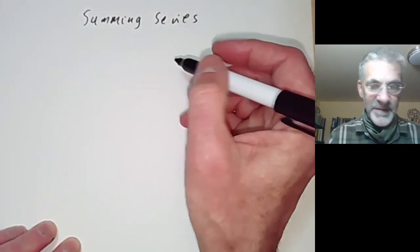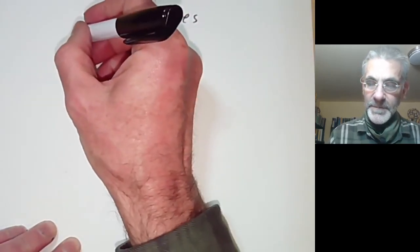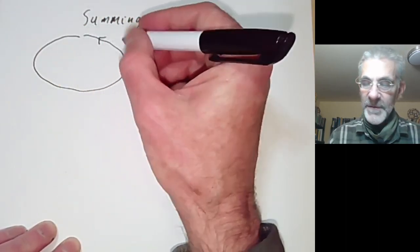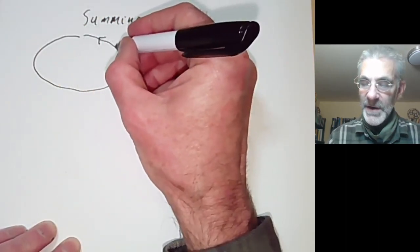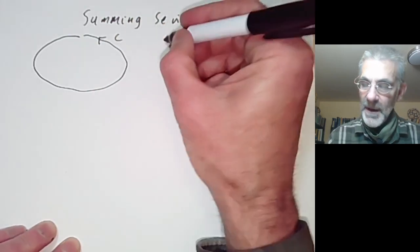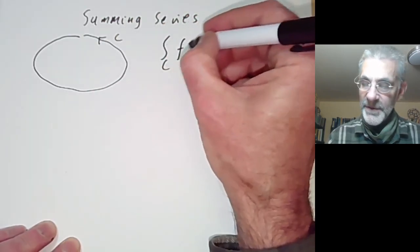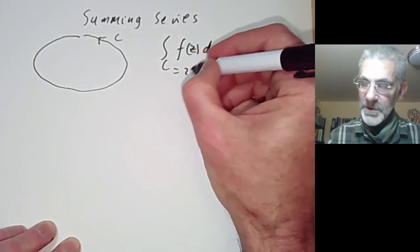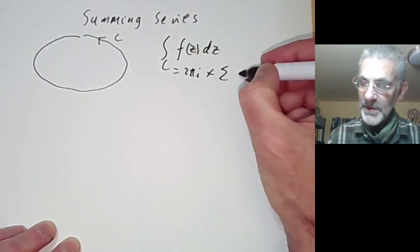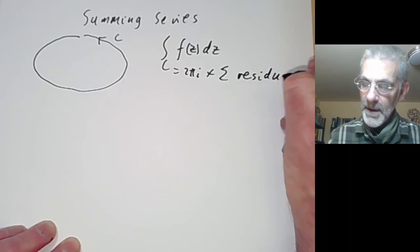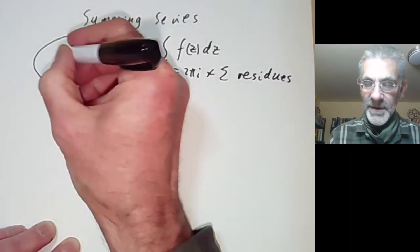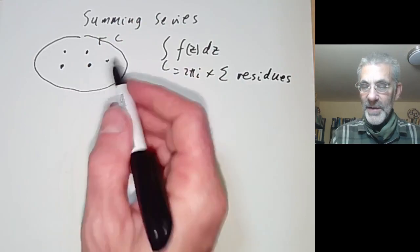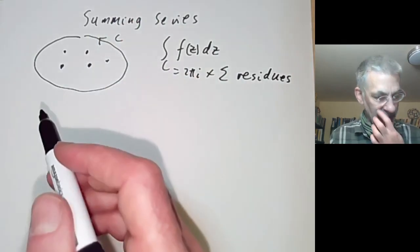The idea is as follows. The residue calculus says that if we integrate around a contour C, then the integral around this contour of f(z) dz is equal to 2πi times the sum of all residues inside, assuming there are a finite number of points inside the contour where the function is not holomorphic.